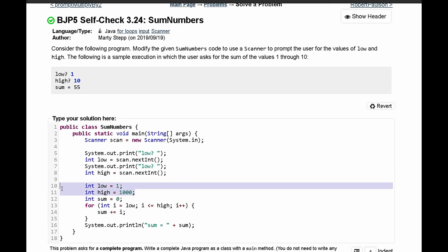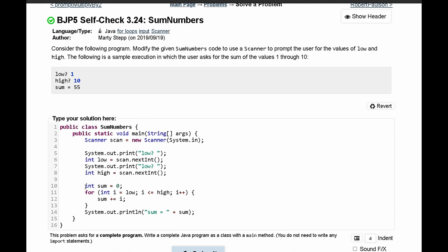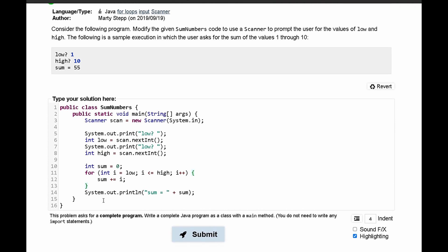We declare sum equal to zero, and now in our for loop we are incrementing sum every single time we're incrementing i, and we're storing it in sum, so we're adding things together. This looks good, and then we're just going to System.out.print sum right here.